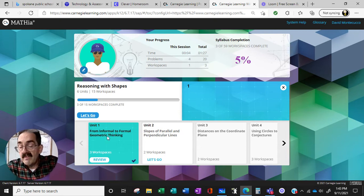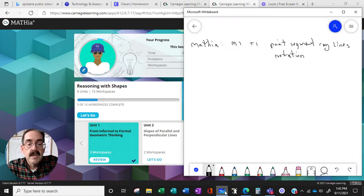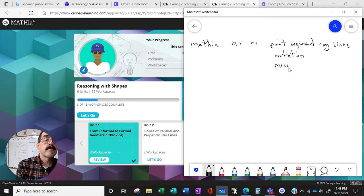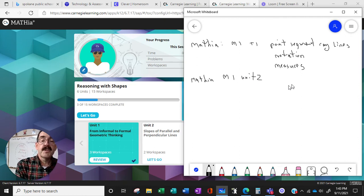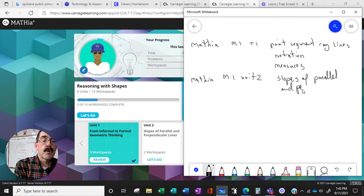The formal and informal geometric thinking, which was points, lines, rays, segments, notation, and measures. Okay, so now we are MathIA M1, Unit 2, slopes of parallel and perpendicular lines.